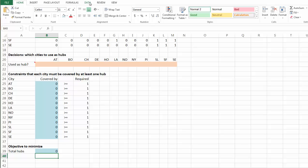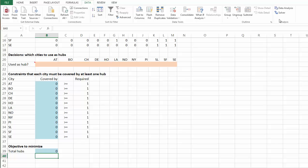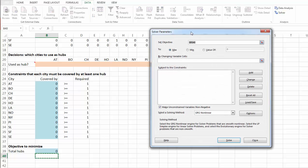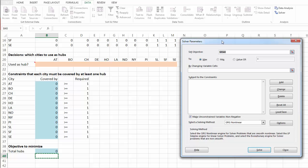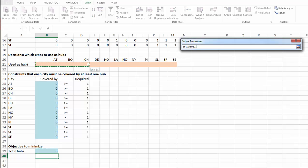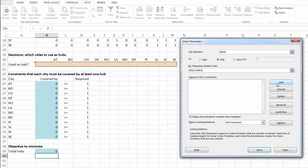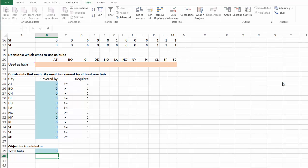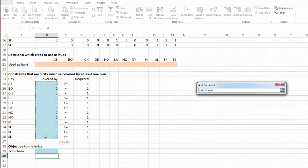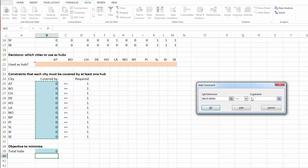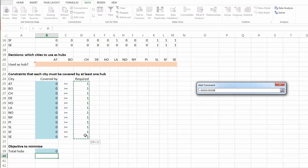Now, let's launch our solver. Our objective is in cell B39. We would like to minimize it by changing those 12 binary decision variables. Let's add constraint. And the number of hubs that cover each city got to be greater than or equal to one. That is required.